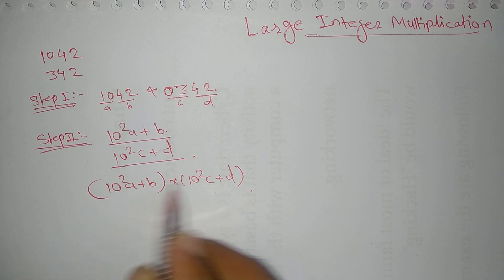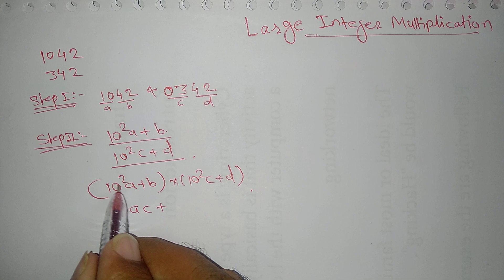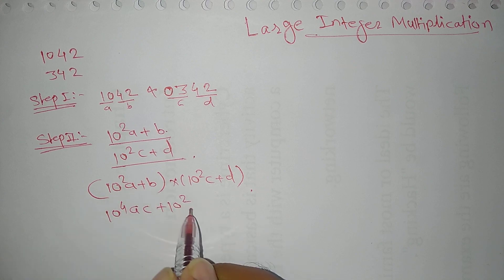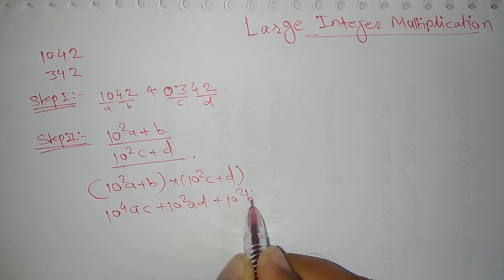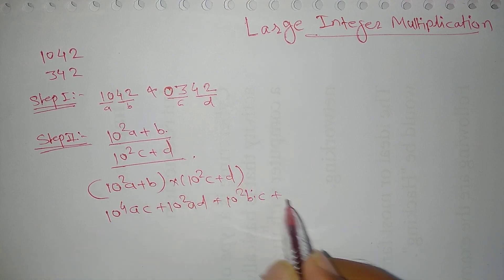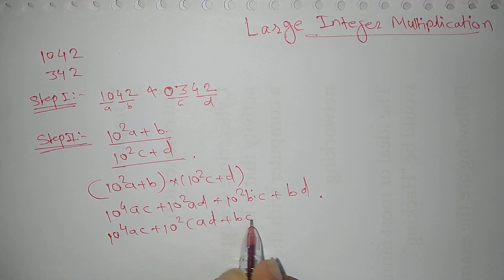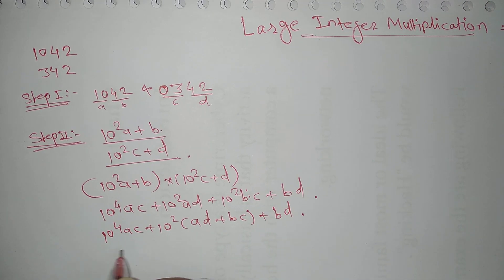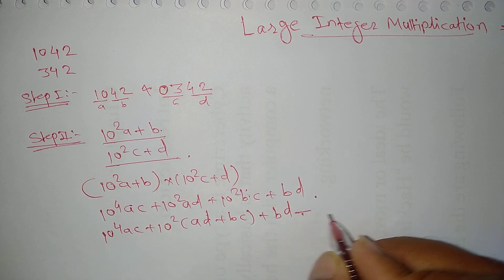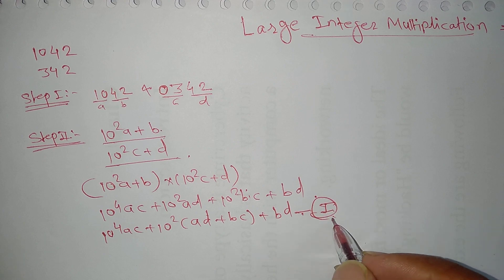When I do that multiplication, I get: 10⁴ × AC + 10² × AD + 10² × BC + BD. If I make a common factor with 10², I will receive 10⁴ × AC + 10² × (AD + BC) + BD. This will be equation number 1, which I get from the divide and conquer approach.